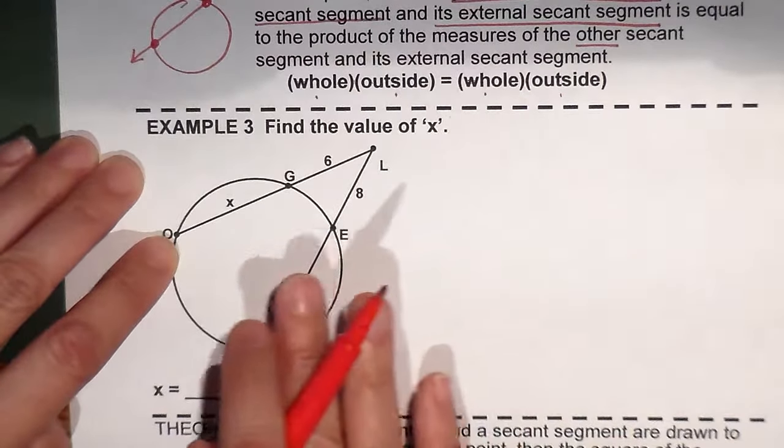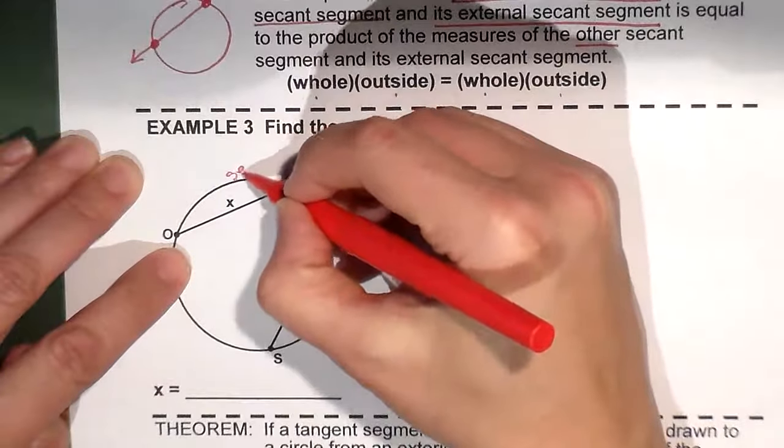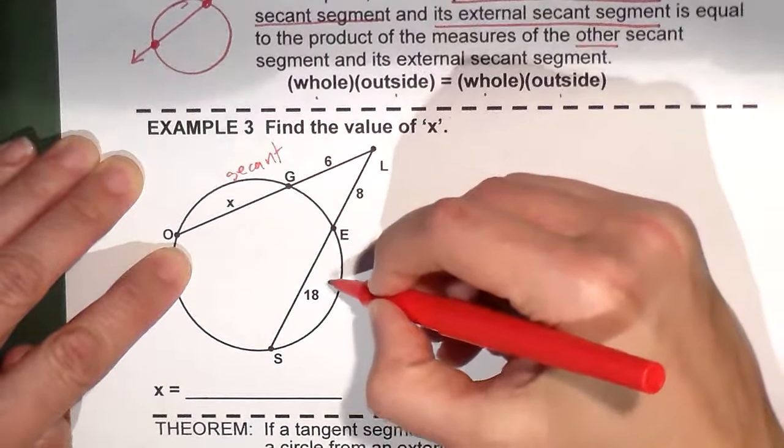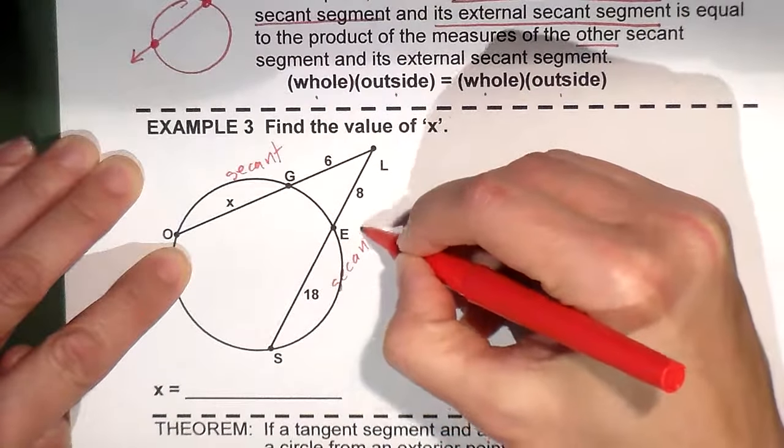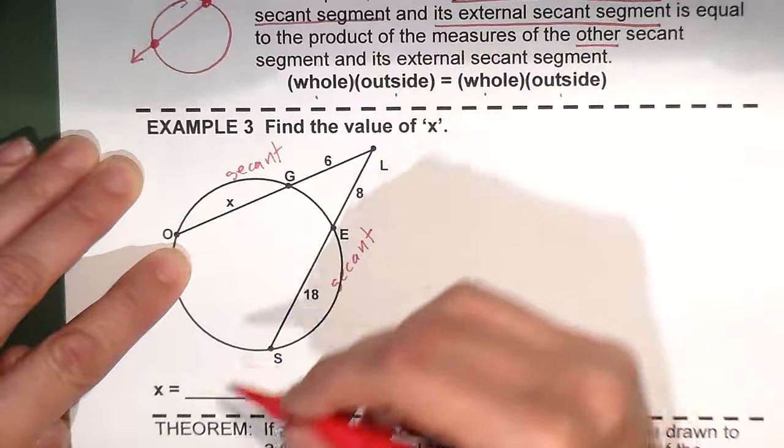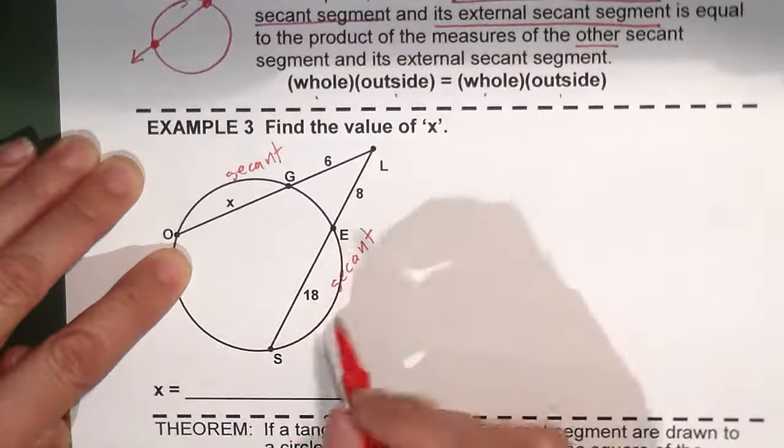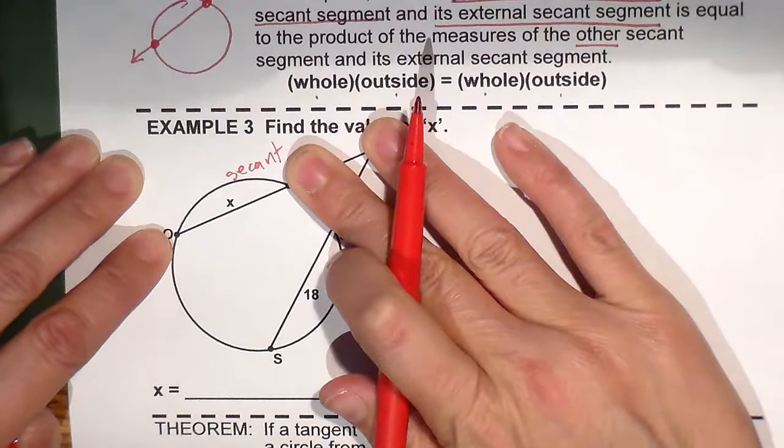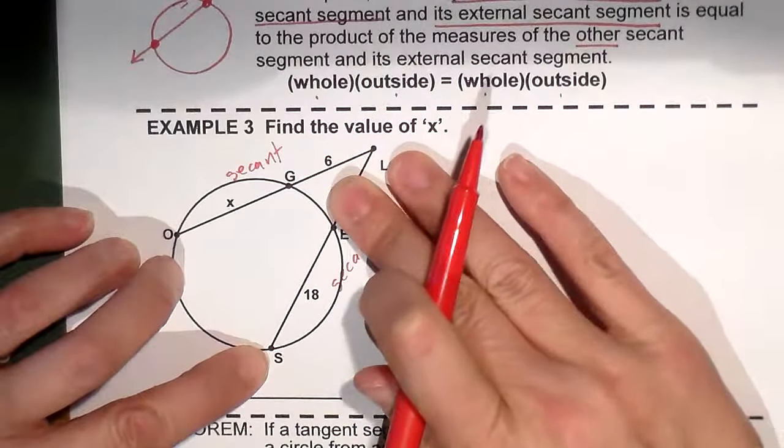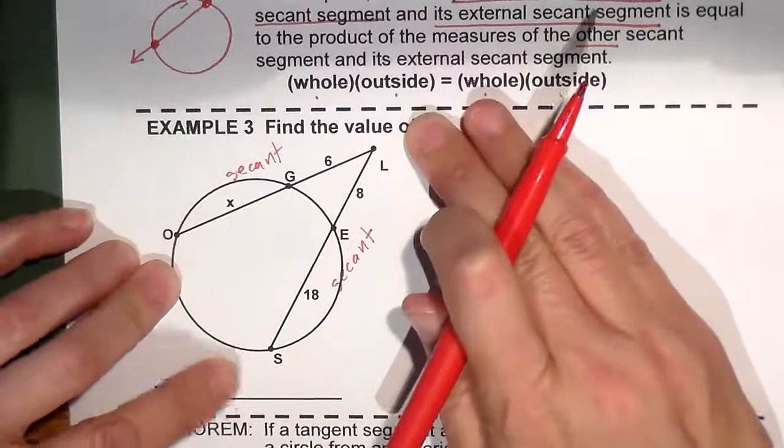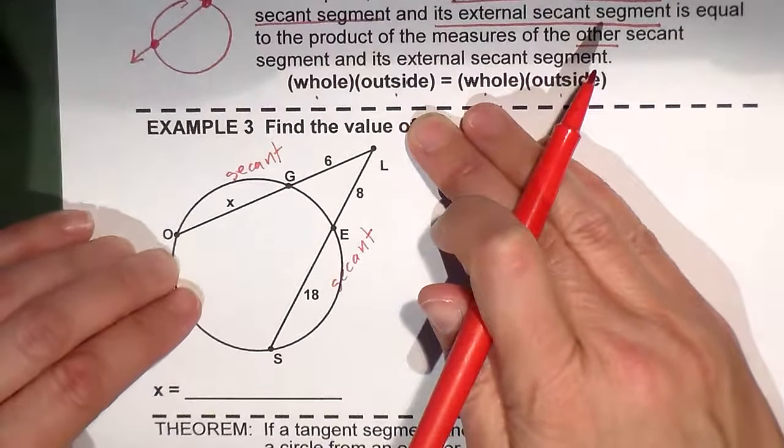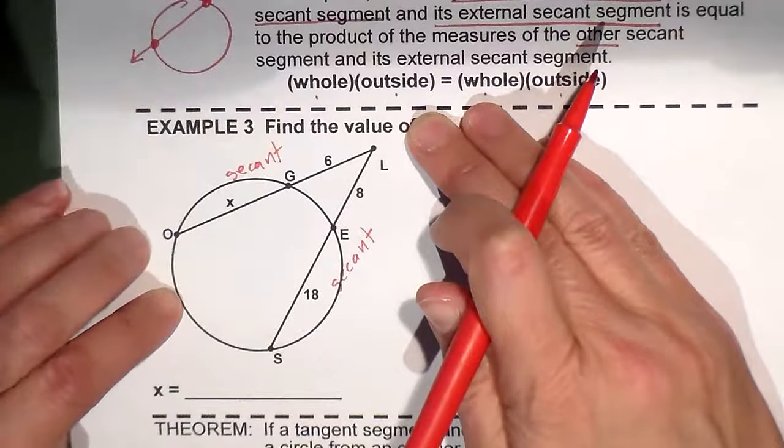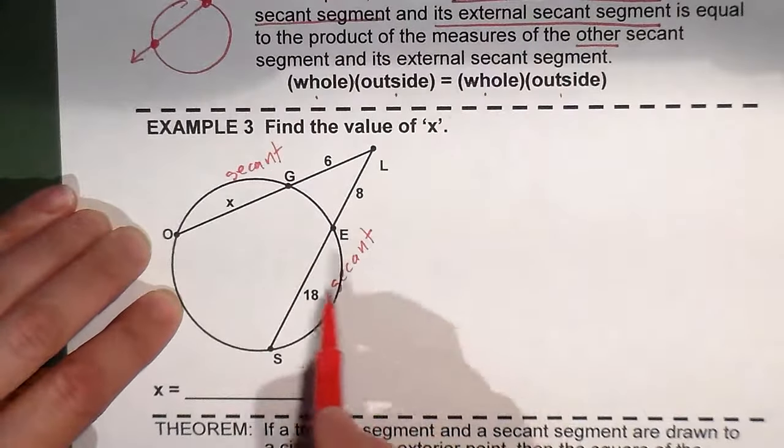So these are two secants. I'm going to write that. That's a secant and that's a secant. Why are they secants? Because they intersect the circle in two points. A chord would look like this. This would be a chord. That would be a chord. But it goes on. Chords stop. It goes on. So we have secant, secant.